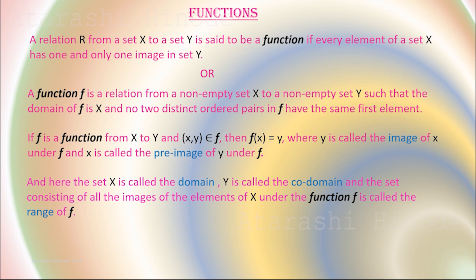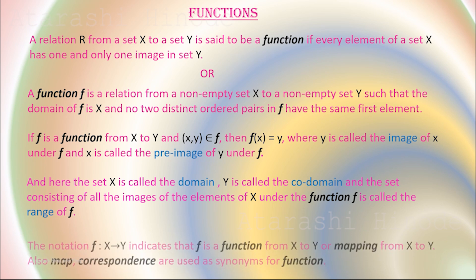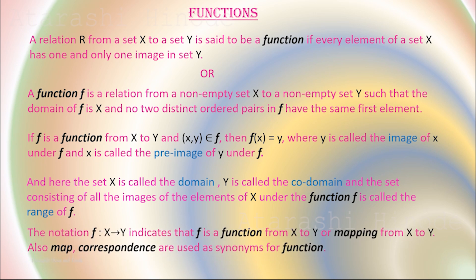And here, the set X is called the domain, Y is called the co-domain, and the set consisting of all the images of the elements of X under the function f is called the range of f. The notation f: X→Y indicates that f is a function or mapping from X to Y. Also, map and correspondence are used as synonyms for function.